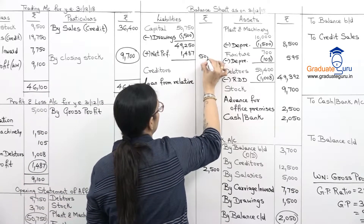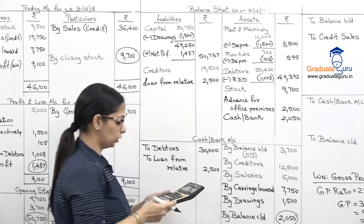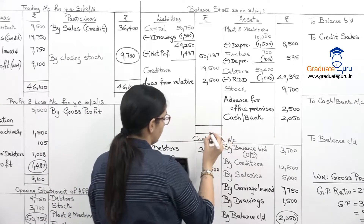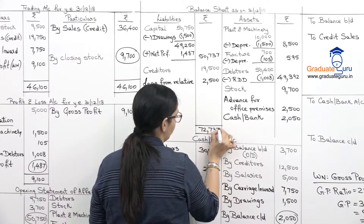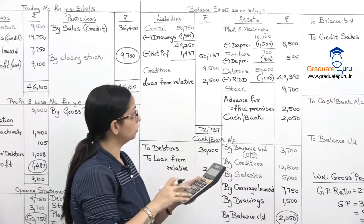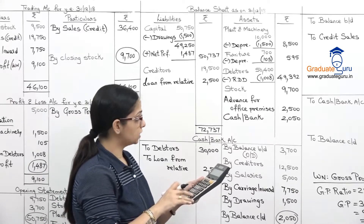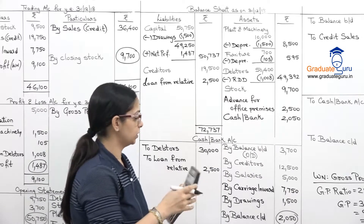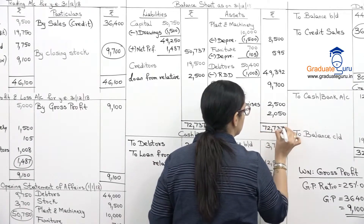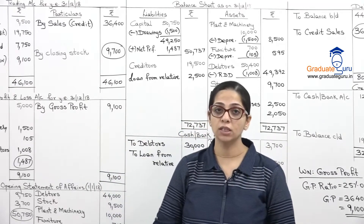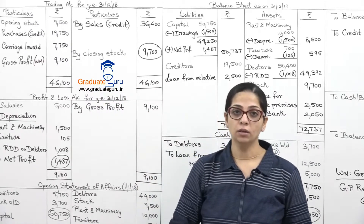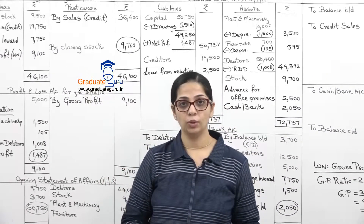Completing the balance sheet: liabilities total — creditors 19,500 + loan 2,500 + capital 50,737 = 72,737. Asset side — furniture 595 + dators 49,392 + stock 9,700 + advance 2,500 + cash 2,050 = 72,737. The balance sheet tallies at 72,737. The unique feature of this sum was that closing stock was missing, requiring us to first find GP using the ratio.